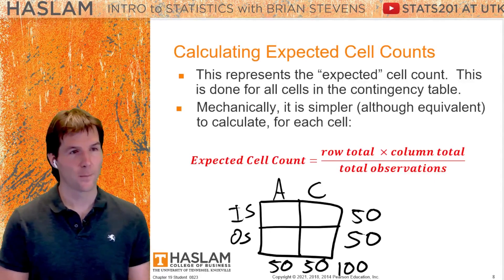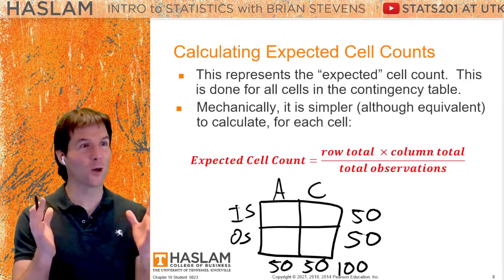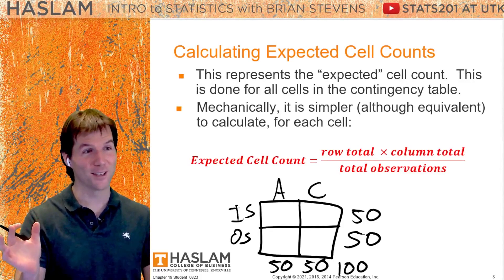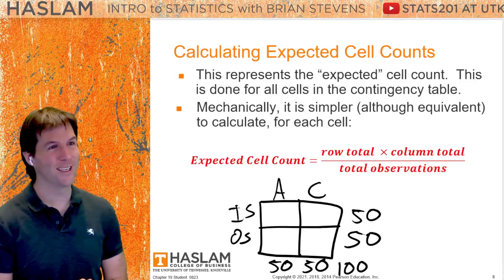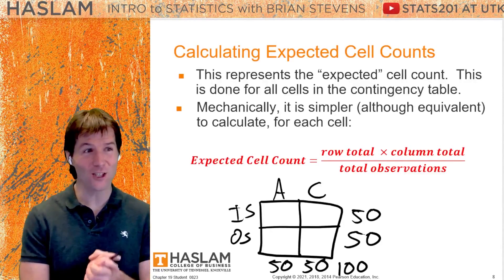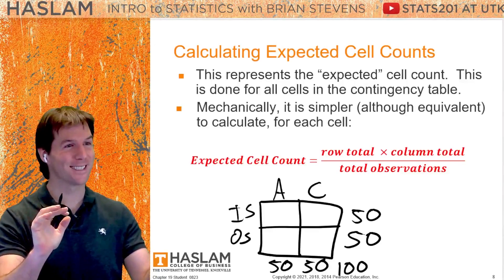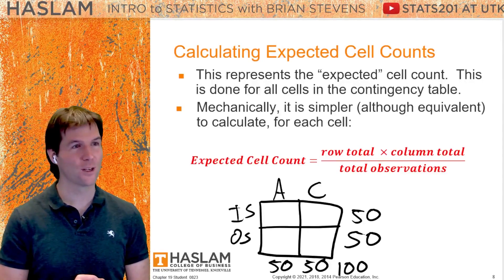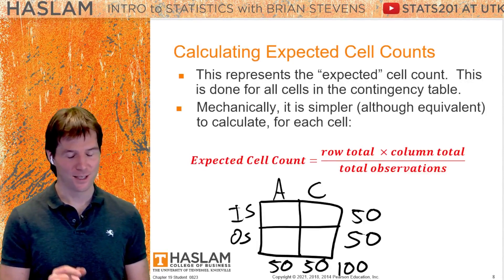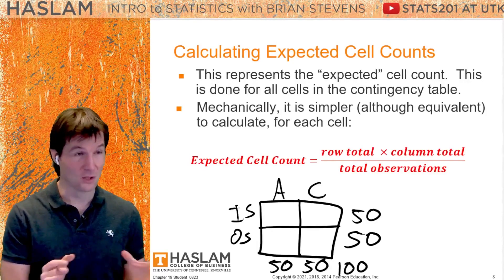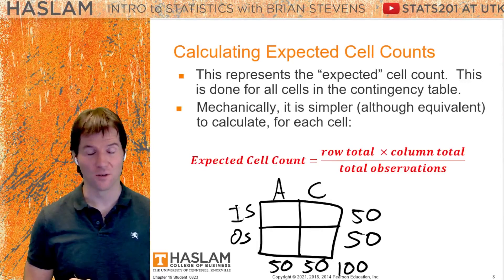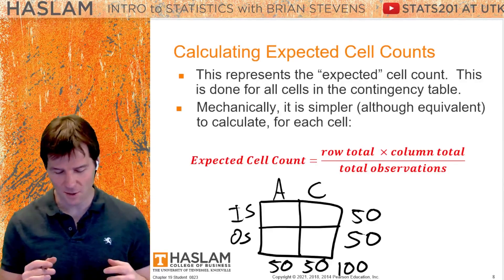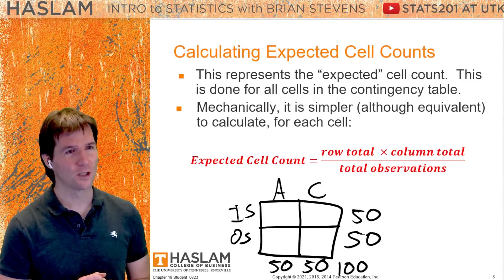When you look at this, an adult is someone over the age of 40 who is not in college. A college student is anybody in college — that's the operational definition. You could be 90 and in college, and you'd be a college student. Operational definitions are used. So how many adults would you expect to be in shape?